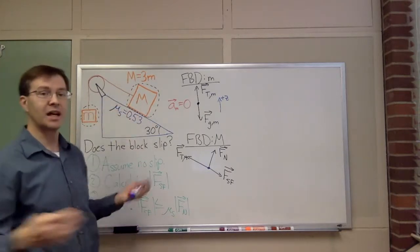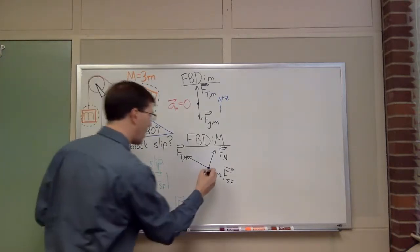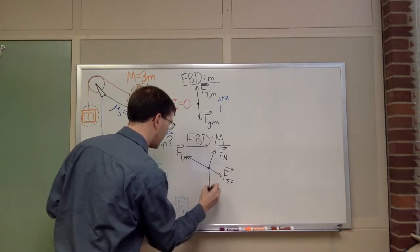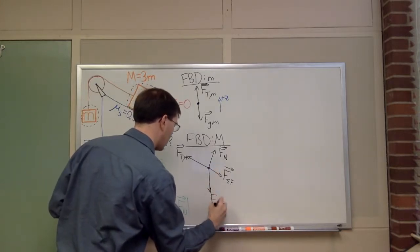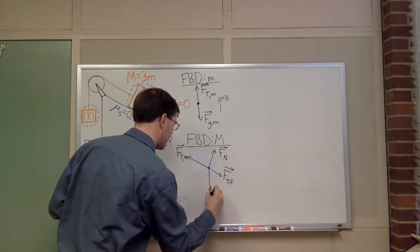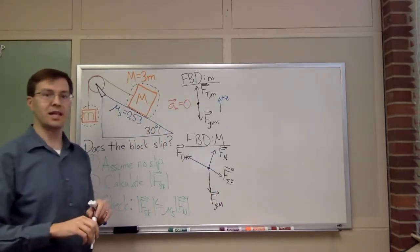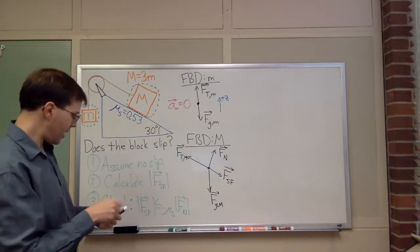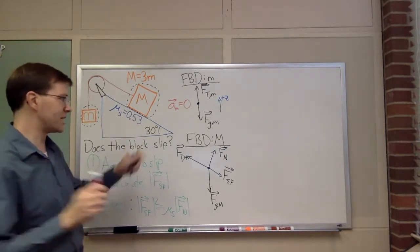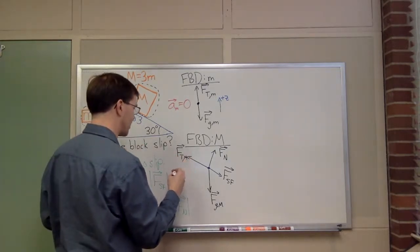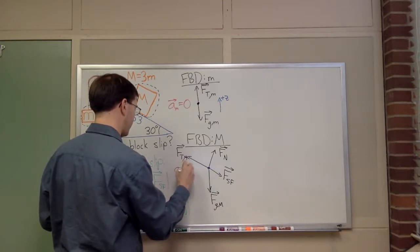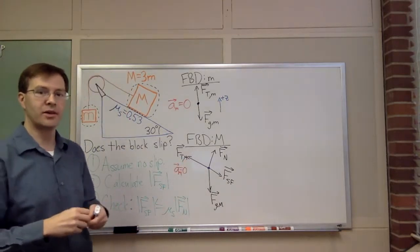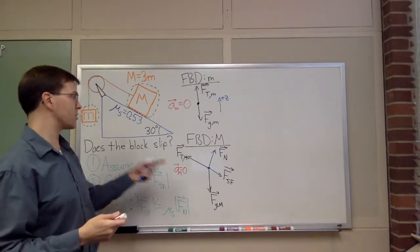Those are the only contact forces. Long-range force: gravity acts on the big mass going straight down. Now I'm correcting myself: since I'm assuming no slip, my acceleration equals zero. Acceleration of my big mass equals zero because we're assuming it doesn't slip.